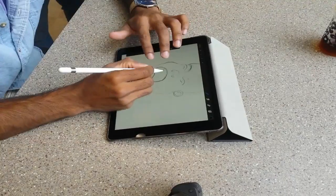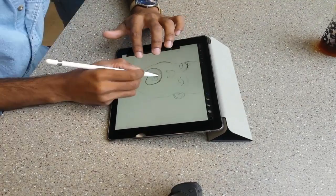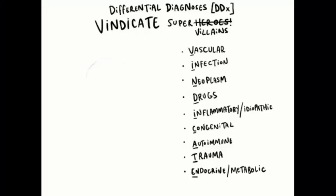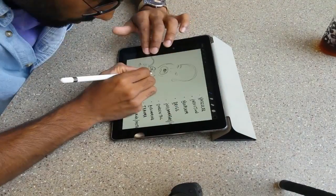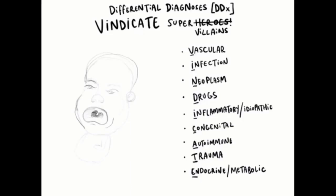In class the other day we were going over clinical correlates, and one of the doctors from Freider who was lecturing gave us a cool mnemonic called VINDICATE. Each first letter of VINDICATE gives us a different differential diagnosis to watch out for when looking for specific diseases.